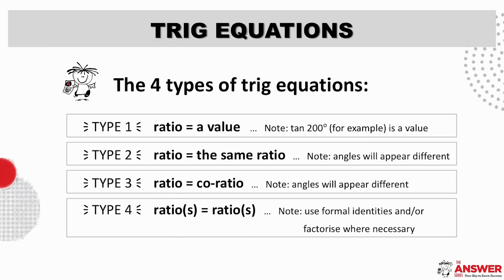First, let's have a look here at the four types of trig equations that we encourage you to consider. The first type is when a ratio equals a value. Here the right hand side can be a value or a ratio of a numerical value which can be calculated. Like for example it's possible to calculate the value of tan of 200 degrees.